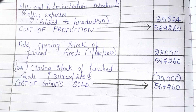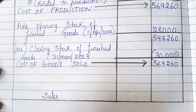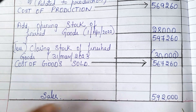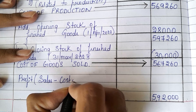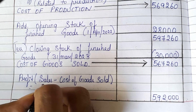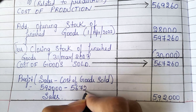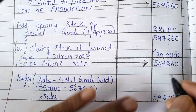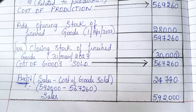They have given us sales of finished goods. Leave two lines of space and write sales at the end. The sales value given is 5,92,000. The formula to find profit is sales minus cost of goods sold: 5,92,000 minus 5,67,260, giving us 24,740. This is our profit.